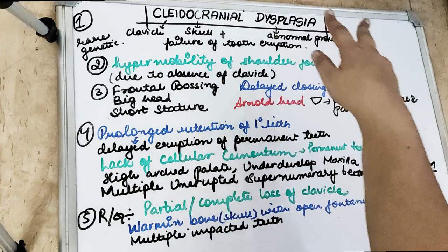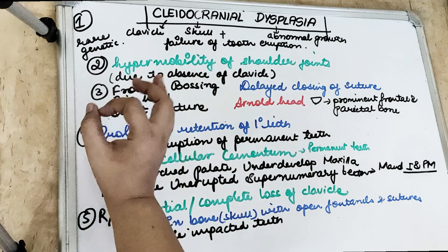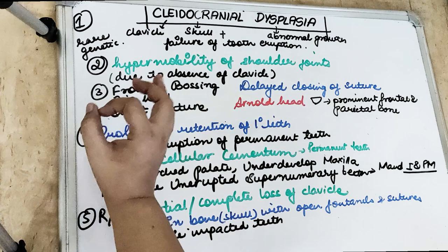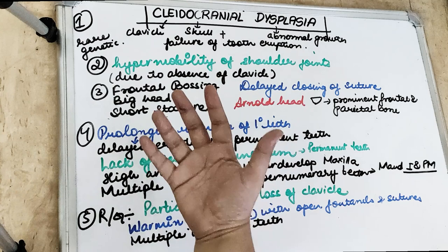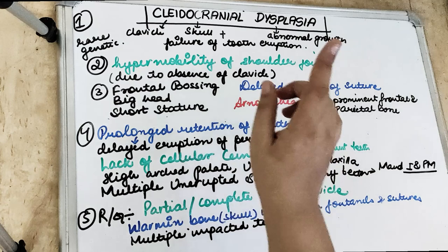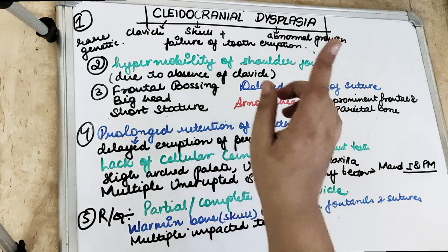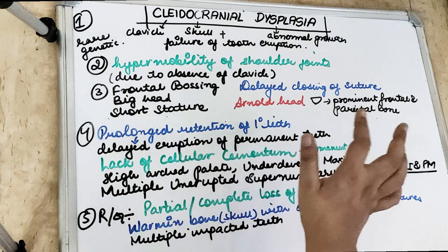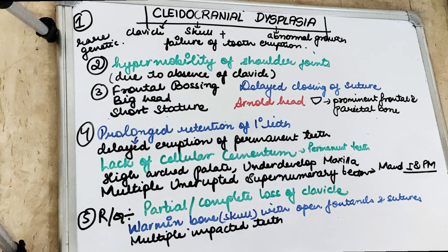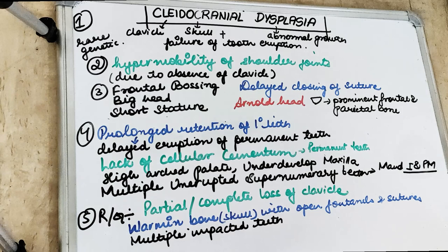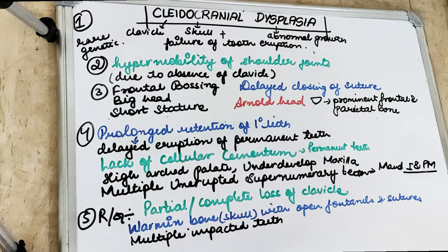Cleidocranial dysplasia refers to abnormal growth of the clavicle and the skull. This is a rare genetic disorder characterized by abnormal growth of the bones in the clavicle, skull, and face, with a tendency for failure of tooth eruption. There is prolonged retention of the primary teeth, failure of eruption of permanent teeth, lack of acellular cementum in the permanent teeth, and multiple unerupted supernumerary teeth in the mandibular incisor and premolar region.